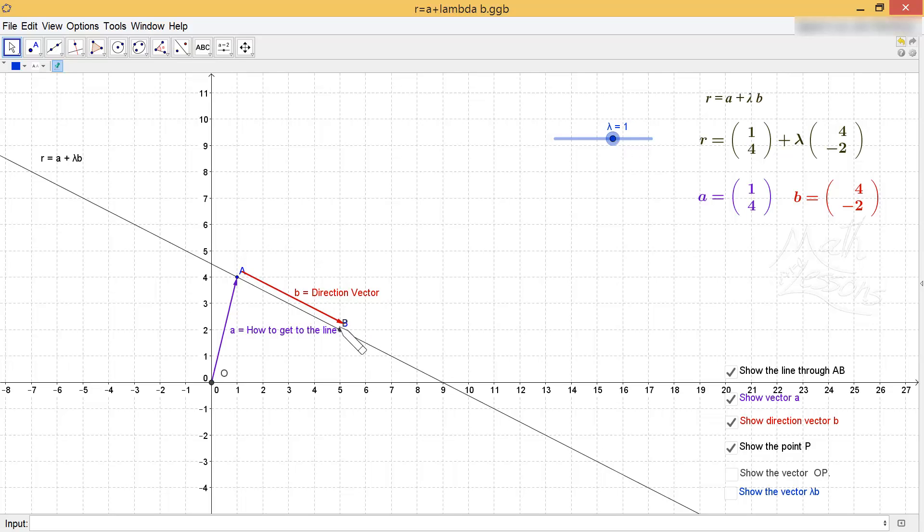Notice that P is right on top of B. So what I've got here is I've moved P along from A one lot of the direction vector B. Now if I move it along two lots, so let's make lambda 2, then I've gone twice as far down this line. And if I make it three lots, then I've gone three times as far down this line.